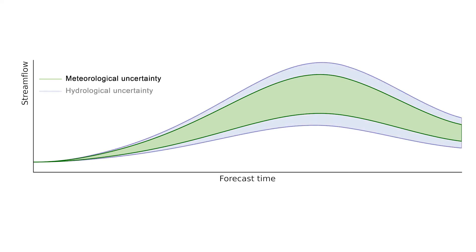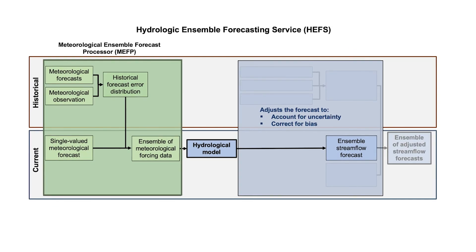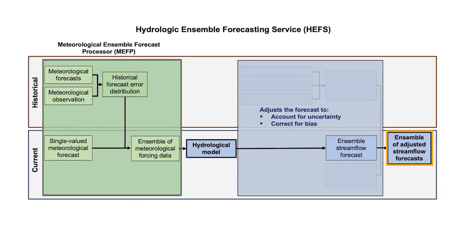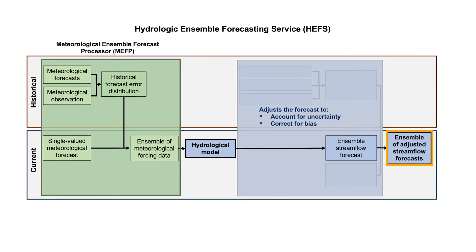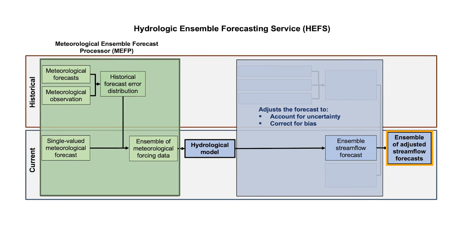However, these forecasts don't yet account for hydrologic model uncertainties or correct for hydrologic model bias. In the next step of the HEFS, the raw ensemble forecasts are adjusted to account for the hydrological modeling uncertainties and to correct for bias using a tool called the ensemble post-processor, or ONCEPOST.